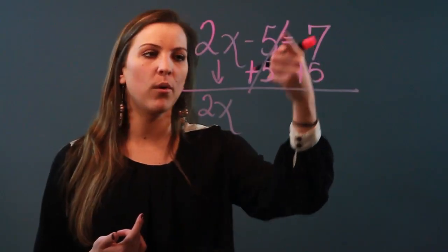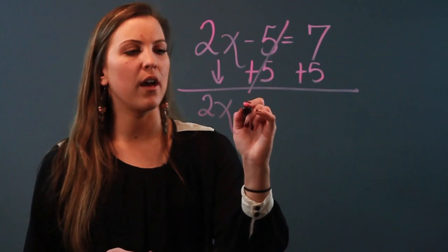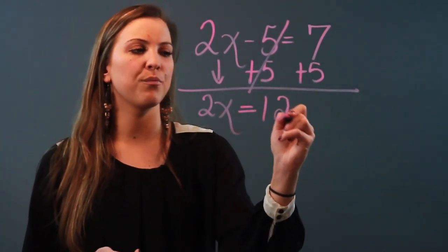So negative 5 plus 5 is 0. I don't need to write it because 2x plus 0 is just going to be 2x. So I've gotten rid of the 5. 7 plus 5 equals 12.